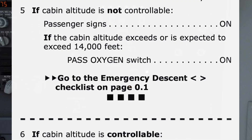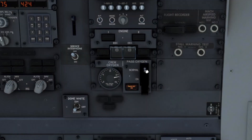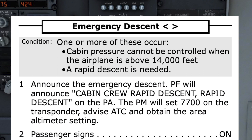The checklist now states to go to the emergency descent checklist. The four black boxes underneath indicate the cabin altitude warning or rapid depressurization checklist itself has been completed. Once again the pilots must concur that the correct checklist is about to be used — the pilot monitoring states the checklist title and reads the condition, asking the pilot flying if they agree this is the correct checklist before continuing.